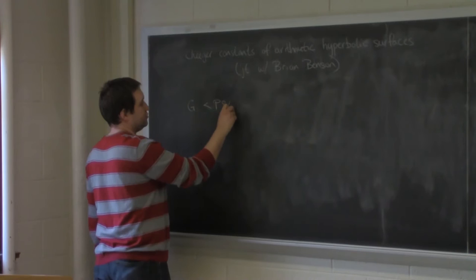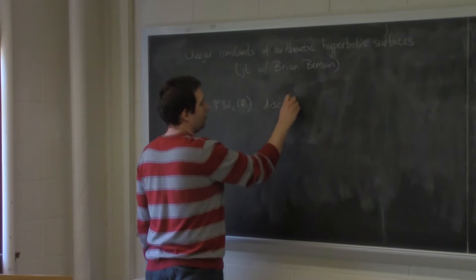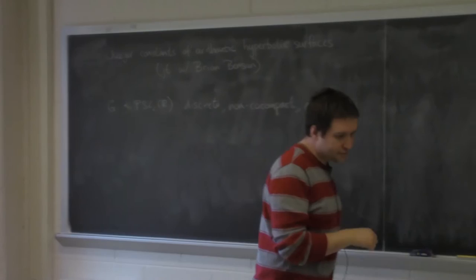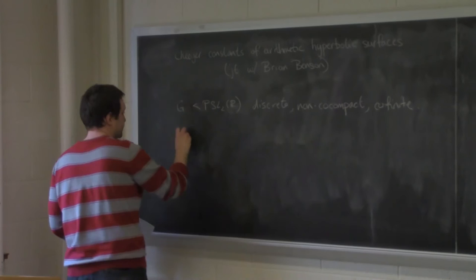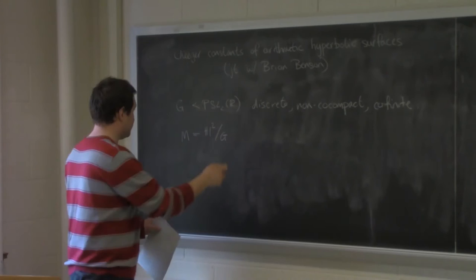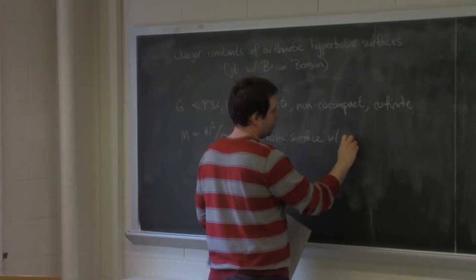Throughout this talk, G will be a discrete subgroup of PSL_2(R). It will be discrete, non-cocompact — just to make things easier — and co-finite, but possibly with torsion. So M will be the surface you get by quotienting the hyperbolic plane by G. That will be a non-compact hyperbolic surface with cusps and possibly cone points.